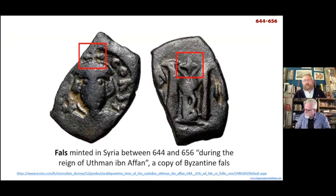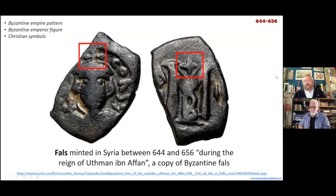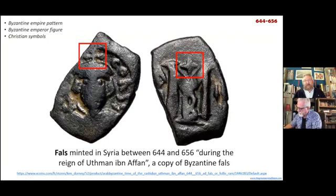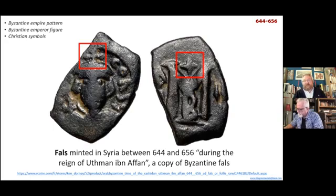We also see the M and the Christian crosses, which tells us that during the time of Uthman, the Arab leader who minted this coin was still using a Byzantine Empire pattern with the Byzantine Empire figure on his coin and with Christian symbols. So it's the same as the previous coin.